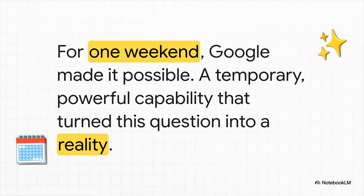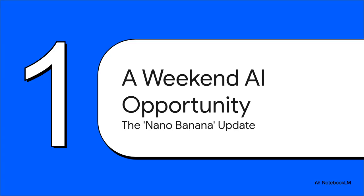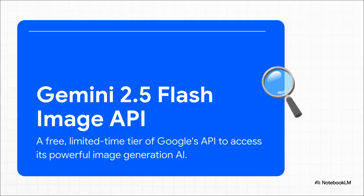It was a total blink-and-you'll-miss-it kind of thing, but the implications are huge. So let's get into the specifics — what exactly was this opportunity? Well, for just one weekend, Google rolled out a temporary free tier for its super powerful AI. The source material gave it this fun, quirky name: the Nano Banana Update. What that really means is that Google opened up free access to its Gemini 2.5 Flash Image API. Instead of just using AI tools made by the big guys, you could suddenly build your own — tap right into Google's amazing image generation engine, and the best part? No credit card needed. Just pure creation.